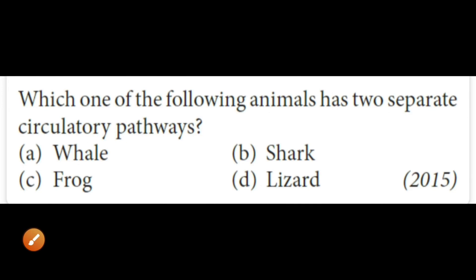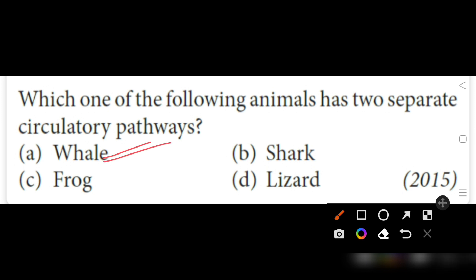Which one of the following animals has two separate circulatory pathways? Two separate circulatory pathways occur in mammals. The options are whale, shark, frog, and lizard. The answer will be whale, because whale is a mammal. So the correct option will be A.